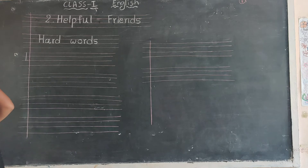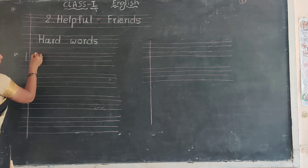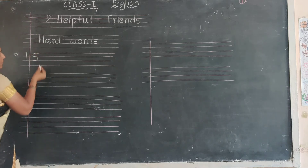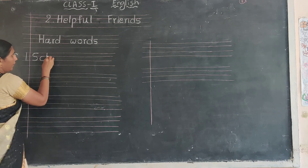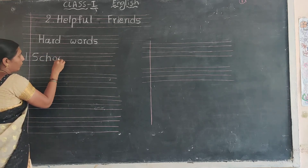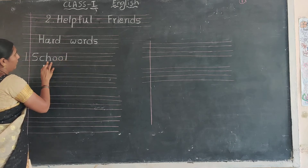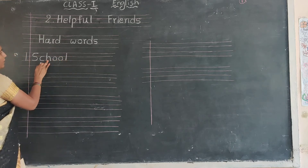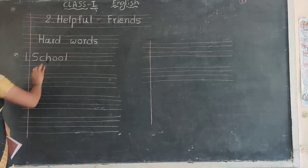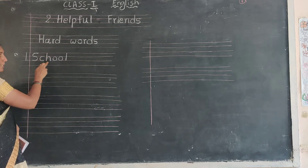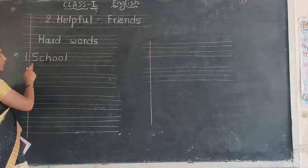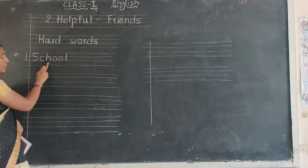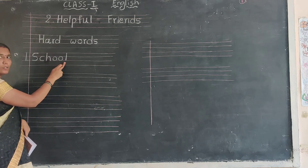Next one. Number one in the margin. Capital letter S. S-C-H-O-O-L. Each and every letter. S-C-H-O-O-L. School. S-C-H-O-O-L. School.